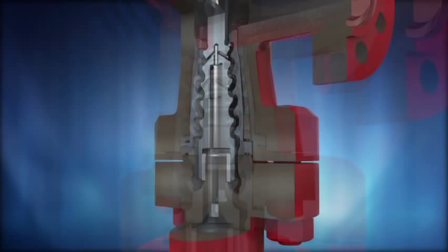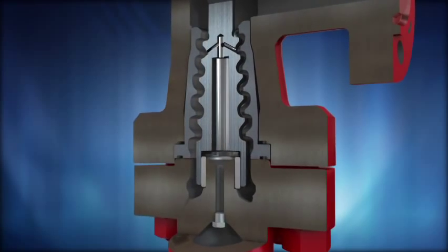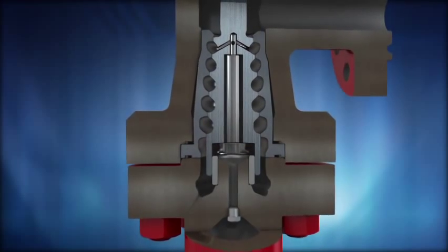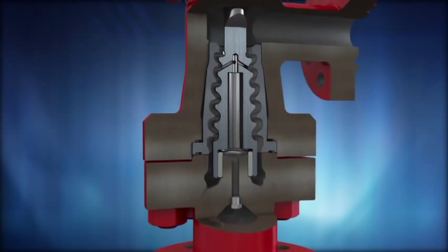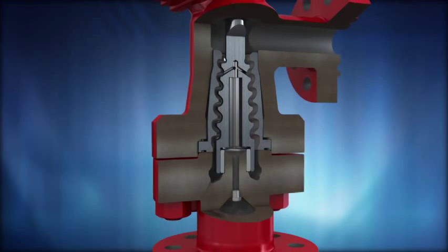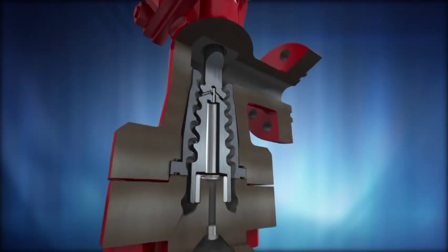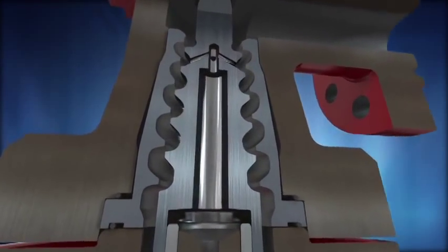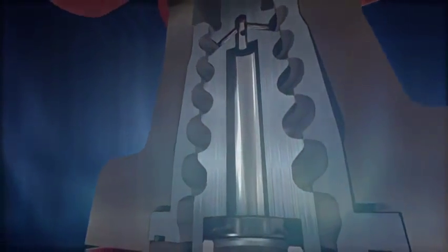Seat damage effects are minimized in the MIL-77000 series by locating the seat on the upstream section of the trim. This design feature ensures that the seat is isolated from the most severe and potentially damaging pressure reduction stages, which are located in the downstream section of the trim.